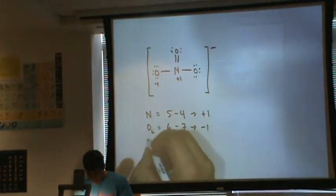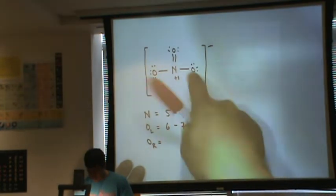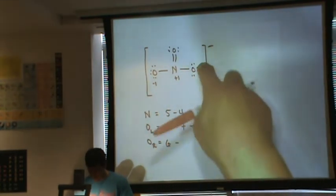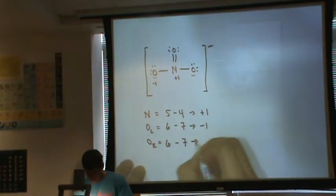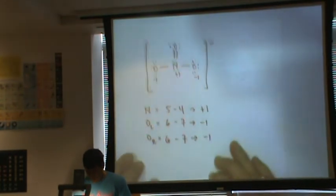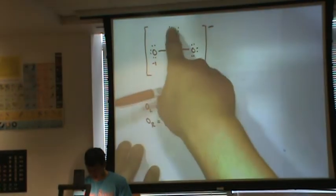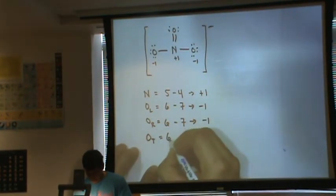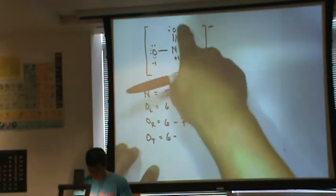Let's do oxygen right. It's this oxygen. Again, six valence electrons. Here it has one, two, three, four, five, six, seven again. Minus one. Finally, the very topmost electron, OT. Six minus one, two, three, four, five, six. Zero.